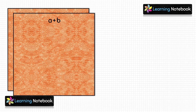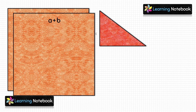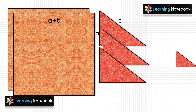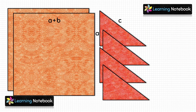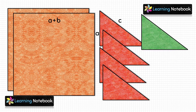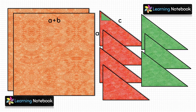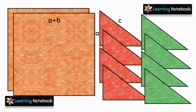So now we have two orange squares of side a + b, four red right angle triangles with sides a, b and c, and four green right angle triangles again with sides a, b and c.